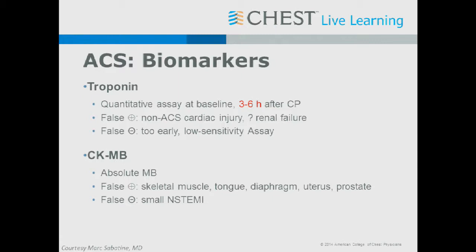Because of that, we need to think about things that might elevate troponin that aren't myocardial injury. Common mimics include other types of cardiac injury — penetrating trauma, cardiac bypass surgery — as well as renal failure impairing clearance, inflammatory myocardial injury, or sepsis. In the U.S. and Canada, most hospitals have moved to modern generation assays; if practicing internationally, some labs have not, and that is a consideration.